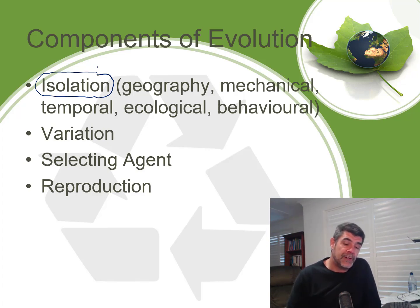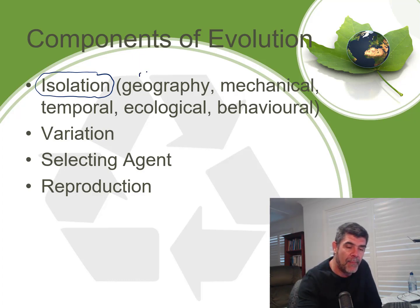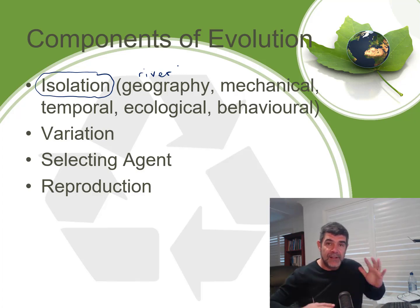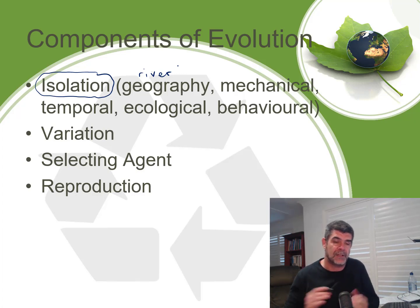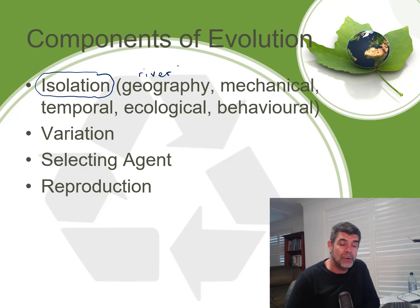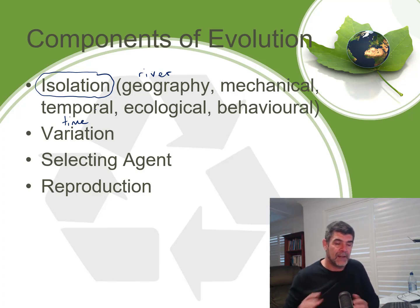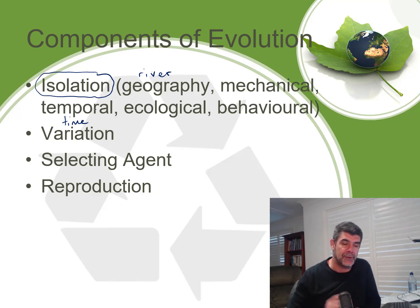Isolation can occur for a number of different reasons. Firstly, it can occur on the basis of geography — something like a river, a mountain, or a stream that separates two populations in a physical geographical sense. Mechanical isolation may relate to differences in sizes of different populations, meaning the mechanics of reproduction don't work as well. Temporal isolation is about time — two different populations may mature at different times of year and therefore don't overlap sufficiently to interbreed.